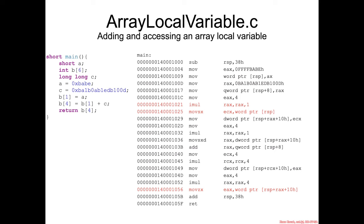Now let's see some more examples of local variable usage, which will actually cause new assembly instructions to appear. In this example called 'array local variable', we've got three variables: a short A, an integer array B which is six integers long, and a long long C.